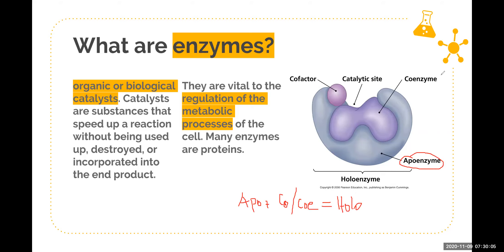The cofactor and coenzyme are additional molecules included in the enzyme for it to function efficiently. Without them, the apoenzyme alone would have difficulty functioning efficiently. Many enzymes in our cells include either a coenzyme or a cofactor, or both. One of them is organic and one is inorganic — you can search for which is which. Together, the apoenzyme plus the coenzyme and cofactors make up the holoenzyme — the complete, whole enzyme.